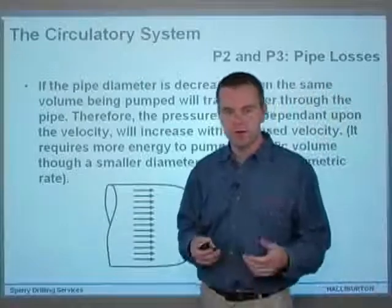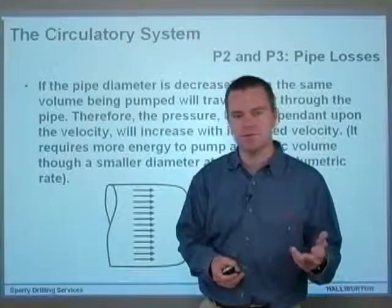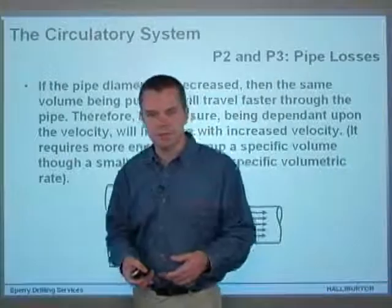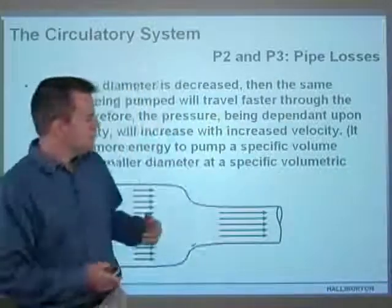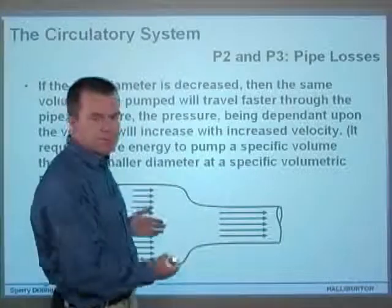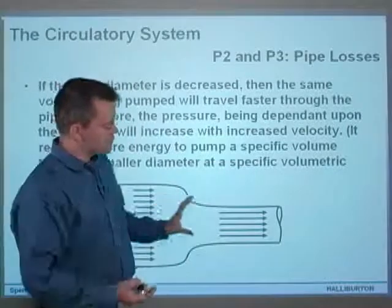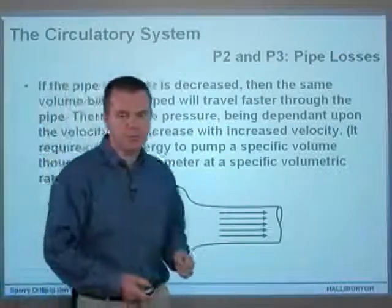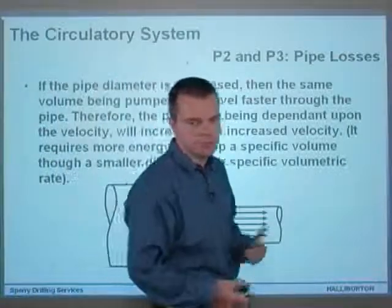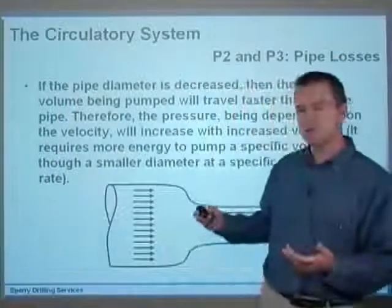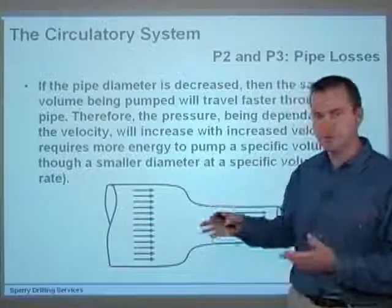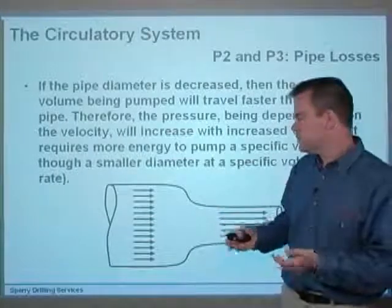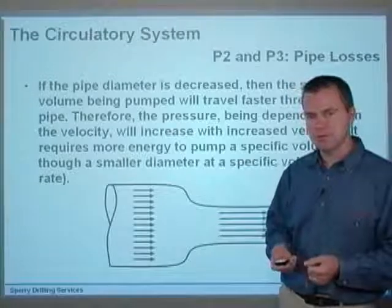It requires more energy to pump a specific volume through a smaller diameter pipe at a specific volumetric rate. Basically, if you're maintaining the flow rate, it takes a higher pressure to get fluid through a smaller diameter pipe. The pressure is determined by the velocity — velocity figures quite highly in the pressure equations.